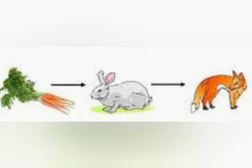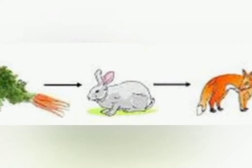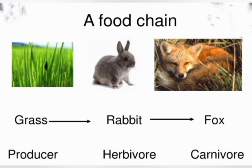In this example, we can see a carrot. Carrot is a producer — it provides food to primary consumers. Here, the rabbit is the primary consumer, and the rabbit is hunted by a fox, which is a secondary consumer.